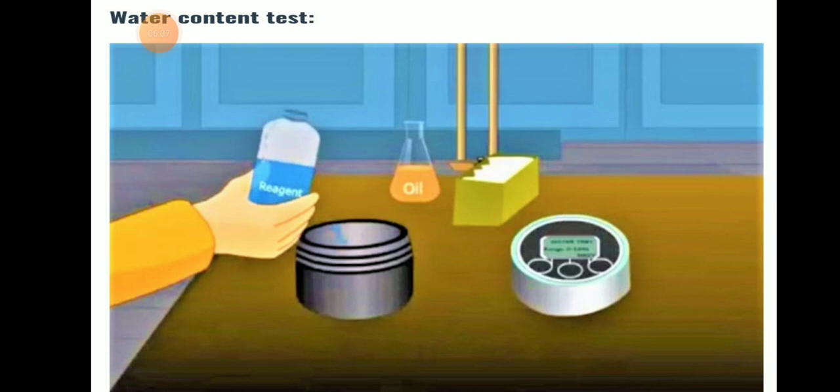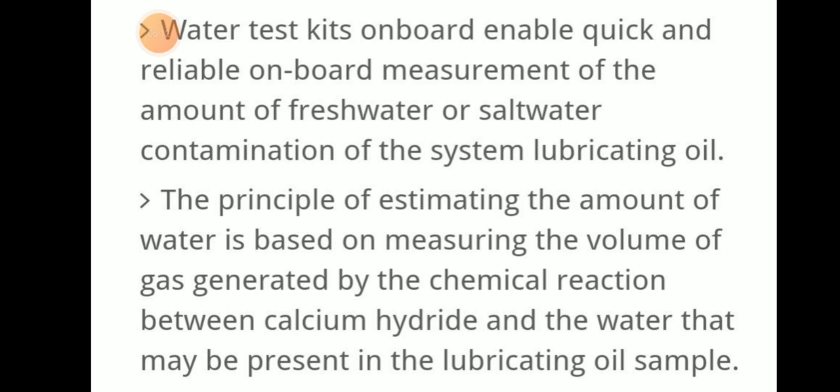The water content test uses a water test kit available on board from makers such as Drew and Unitor. The water test kit enables quick and reliable on-board measurement of the amount of fresh water or salt water contamination in system lubricating oil. The principle of estimating the amount of water is based on measuring the volume of gas generated by the chemical reaction between calcium hydrate and water present in the lubricating oil sample.